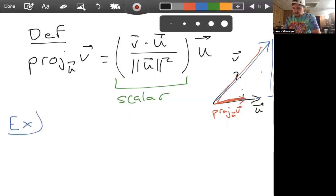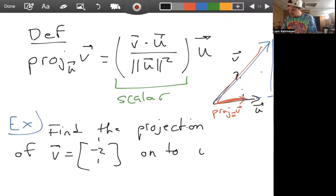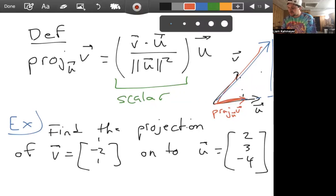So let's do an example here. Let's find the projection of V, which is [1, -2, 1], onto U, which is [2, 3, -4]. Okay, so what do we need? First, for the formula, let's compute all of these things separately.